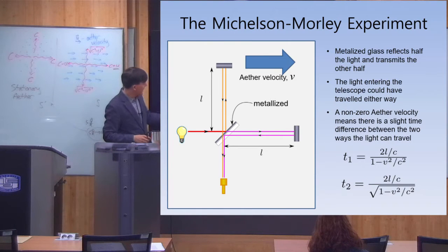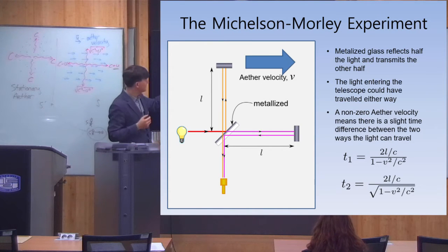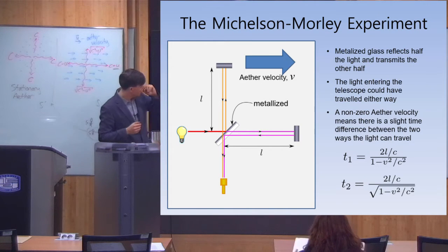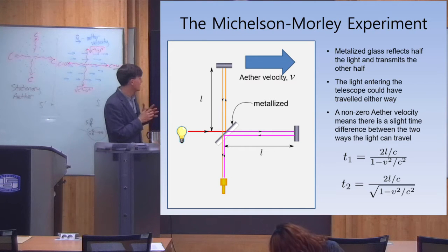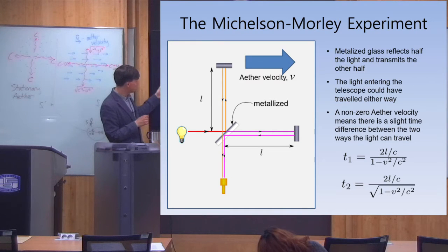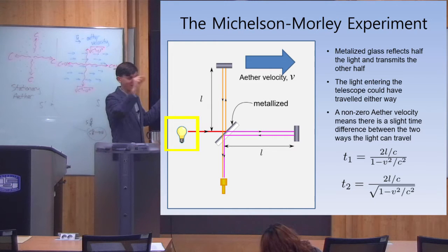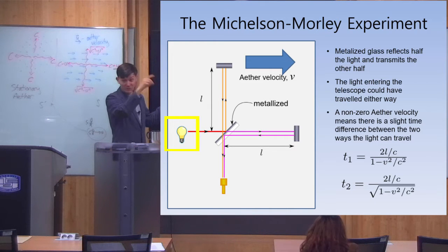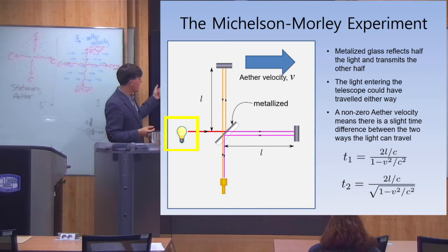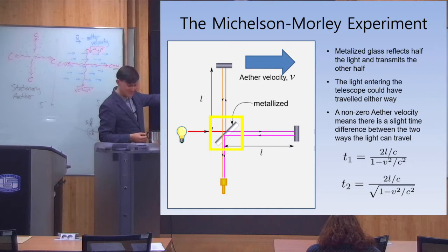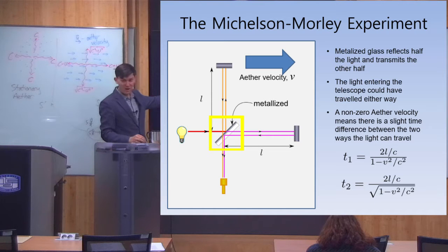This is a diagram of what the experiment looked like. It was done by these two scientists, Michelson and Morley. So you had some light — it needs to be a coherent, single-frequency light source. This light enters the apparatus and the first thing it hits is a half mirror, which is metalized glass.